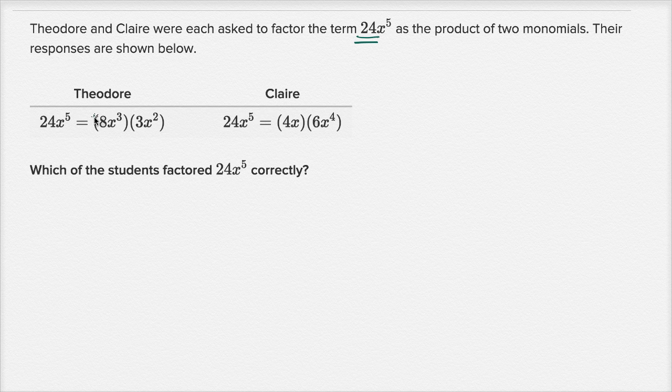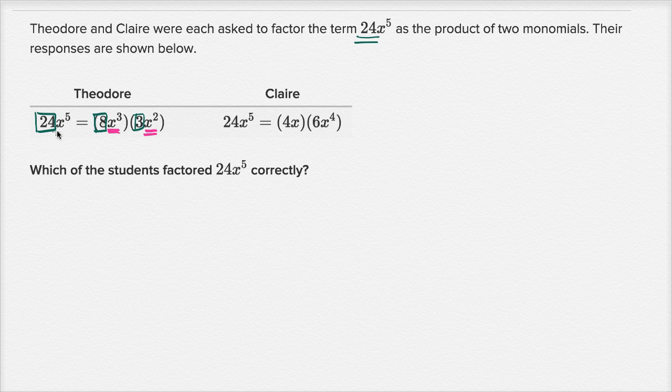So if you multiply 8 times 3 you do indeed get 24. And then all you have to do is multiply the x terms or the powers of x. You have x to the third times x squared. That indeed does equal x to the fifth.